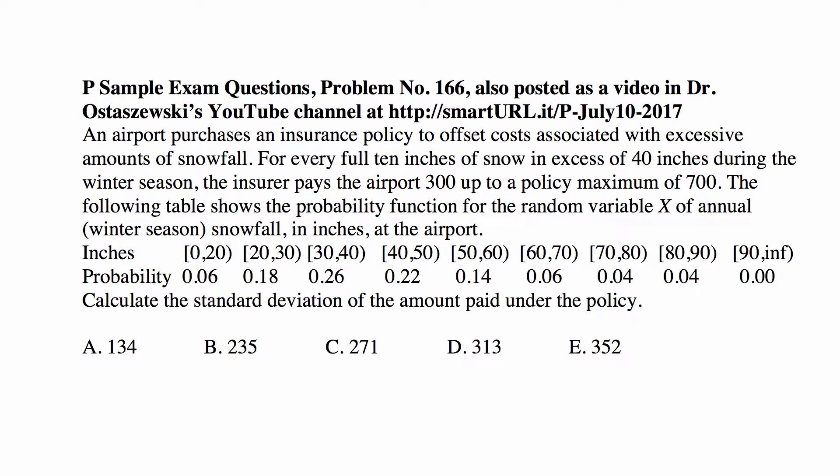Here's our problem. It's problem number 166 in the sample published by the Society of Actuaries. An airport purchases an insurance policy to offset costs associated with excessive amounts of snowfall. For every full 10 inches